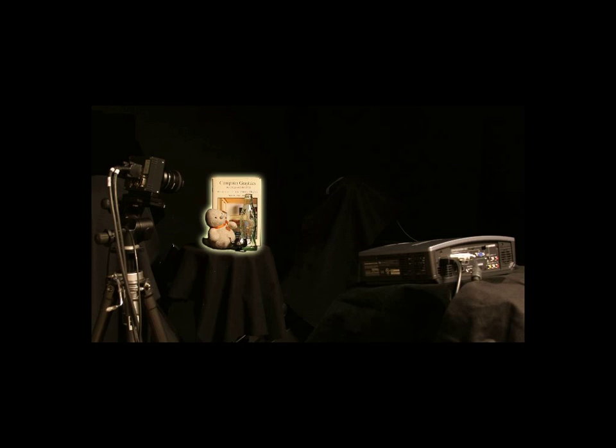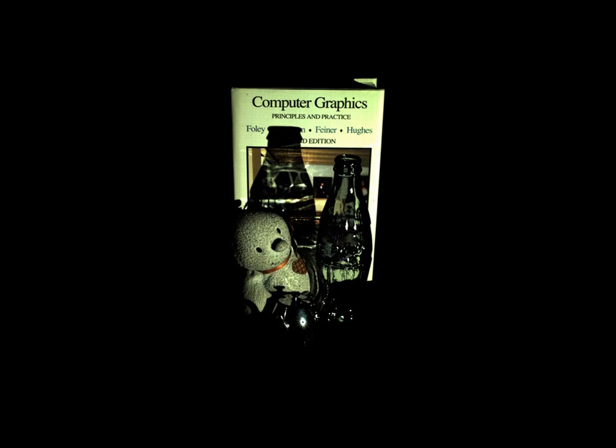Here we have a scene that is imaged by a camera on the left and illuminated by a projector on the right. This is the image taken by the camera, which shows the scene flood illuminated by the projector. In our paper we refer to this as the primal image.